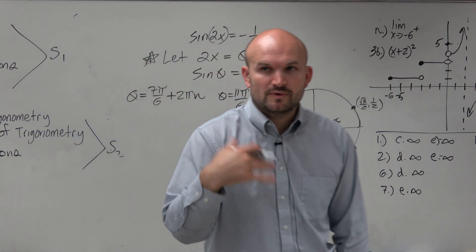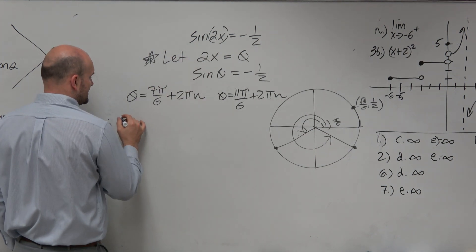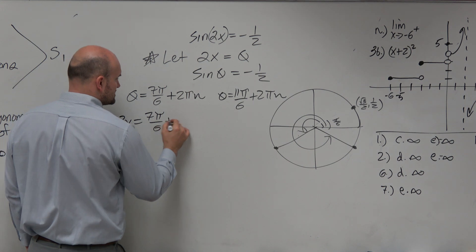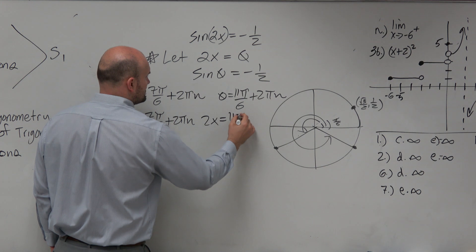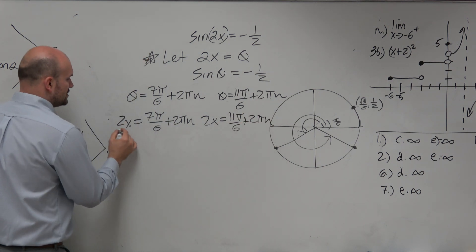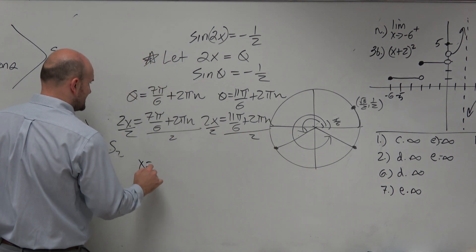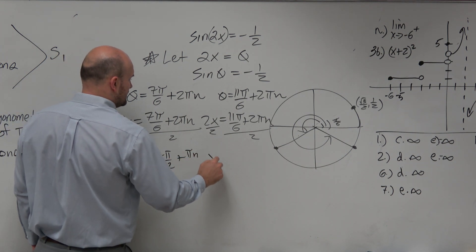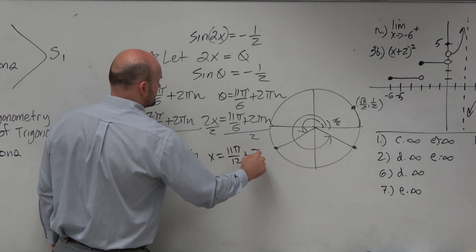However, in our example, we're not solving for theta, guys. We're solving for x. So we can write this as 2x is equal to 7 pi over 6 plus 2 pi n. And 2x is equal to 11 pi over 6 plus 2 pi n. Now, to solve for x, divide by 2 on both sides. And I get x is equal to 7 pi over 12 plus pi n. And x equals 11 pi over 12 plus pi n.